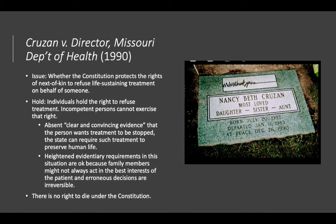The last case we'll talk about is Cruzan, which involves the right to die — or rather, attempts to make a constitutional case for a right to die. The issue is whether the Constitution protects the rights of the next of kin to refuse life-sustaining treatment on behalf of someone else. Individuals can state in advance that they don't want certain life-extending medical procedures — a feeding tube, for example. But if you don't set that out beforehand, and many of us don't, what are the rights of those around us to say that the time has come?